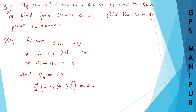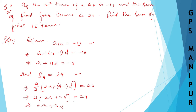Here we are using the formula for SN. So 4 divided by 2 is 2, giving 2 times 2A plus 3D equals 24, which simplifies to 2A plus 3D equals 12. This is equation number 1 and equation number 2 respectively.